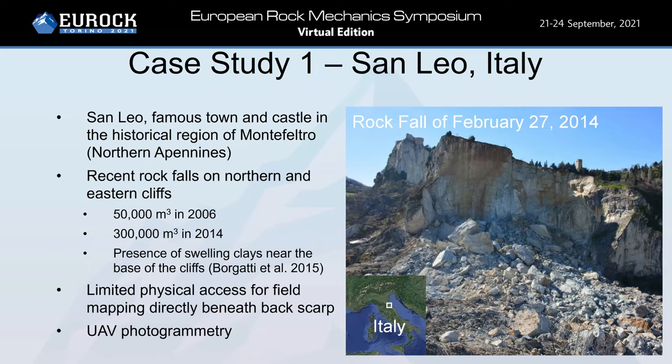In the first case study, we'll review the rockfalls at San Leo in northern Italy. In 2006, the northern and eastern cliffs experienced a 50,000 cubic meter rockfall. This was subsequently followed by a larger slide in 2014, which was 300,000 cubic meters. These have been attributed to the presence of swelling clays near the base of the cliffs. Because of the rockfall hazard, there is limited field access for field mapping directly beneath the backscarp.